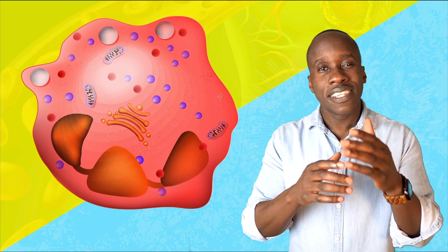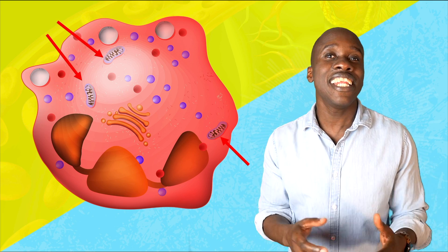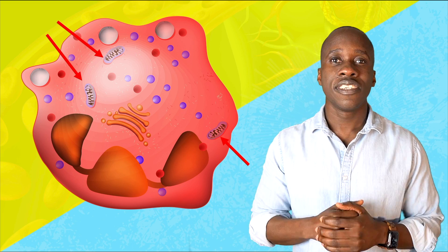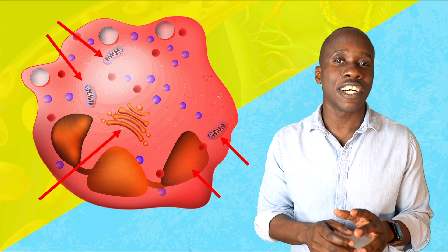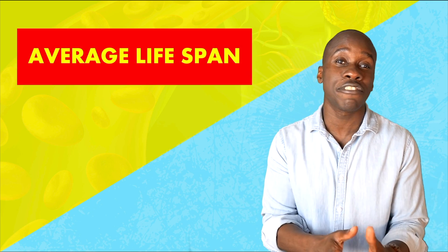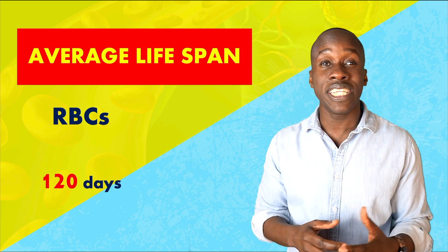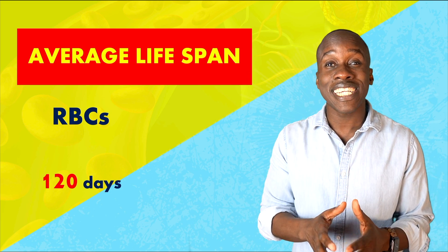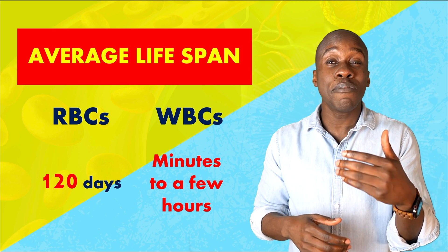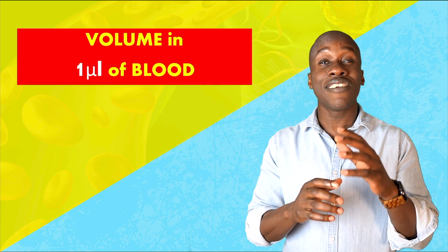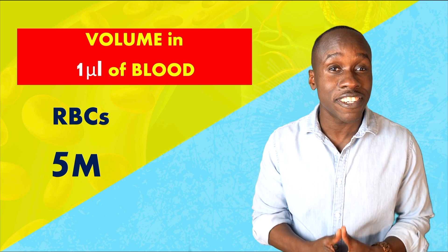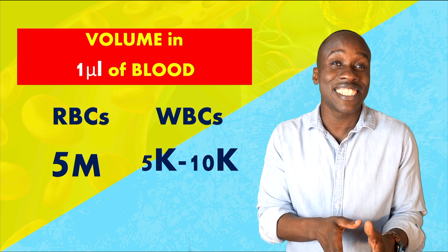Unlike red blood cells, white blood cells need DNA, mitochondria to generate energy, and the ability to create proteins like antibodies. So you will see a nucleus and things like the endoplasmic reticulum. Another difference is that white blood cells don't have as long a lifespan as red blood cells. The average red blood cell lasts around 120 days, but some white blood cells can be around for just a few hours, or even minutes, depending on the type of infection. There are also way more red blood cells - around five million per microliter of blood - compared to typically five to ten thousand white blood cells in that same amount.